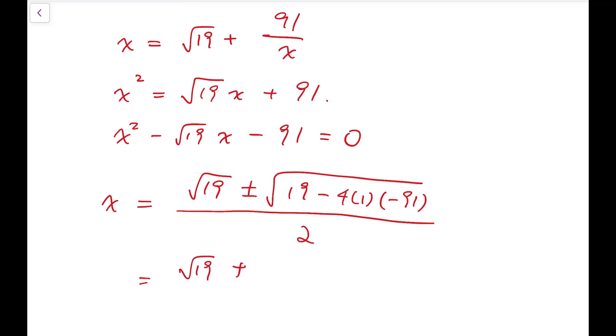So simplifying, our final answer would be x is either square root of 19 plus or minus square root of 383, all divided by 2.